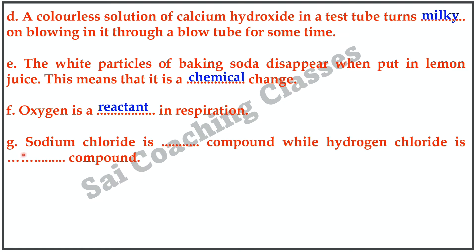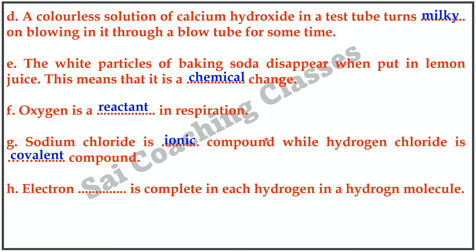G. Sodium chloride is a dot dot compound while hydrogen chloride is a dot dot compound. Answer: Ionic; Covalent.